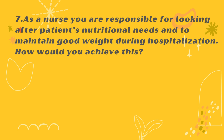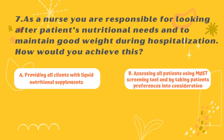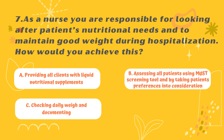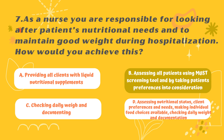Question 7: How would you achieve optimal nutritional care? Option A: Providing all clients with liquid nutritional supplements. Option B: Assessing all patients using the MUST screening tool and by taking patients' preferences into consideration. Option C: Checking daily weight and documenting. Option D: Assessing nutritional status, client preferences and needs, making individual food choices available, and checking daily weight and documentation. The correct answer is B.